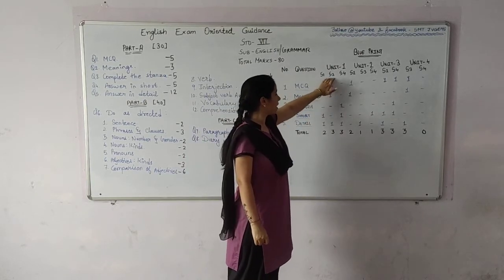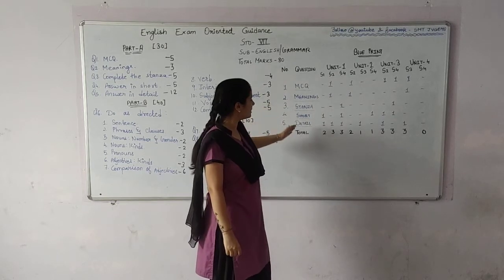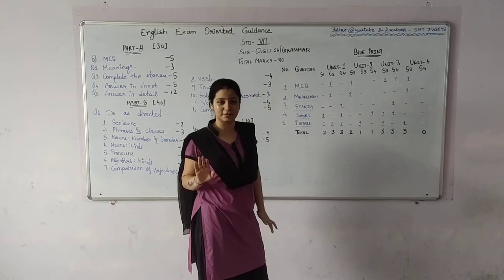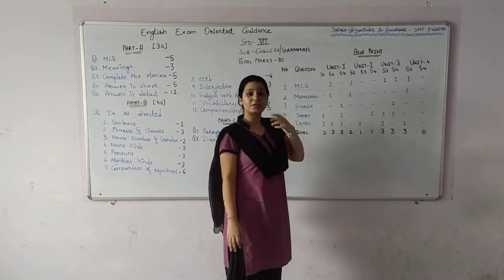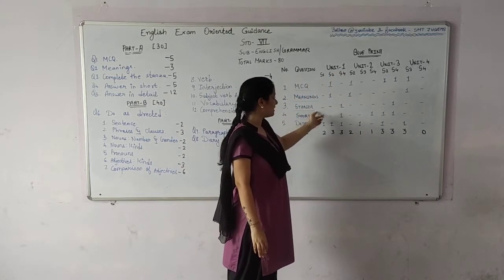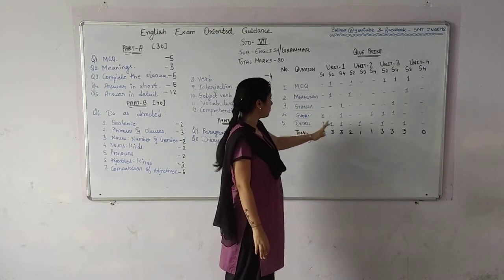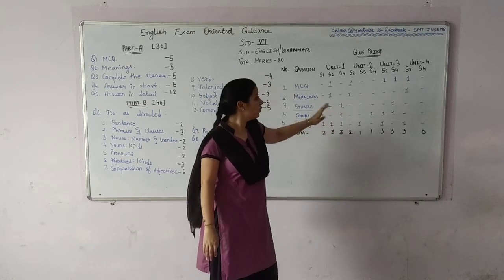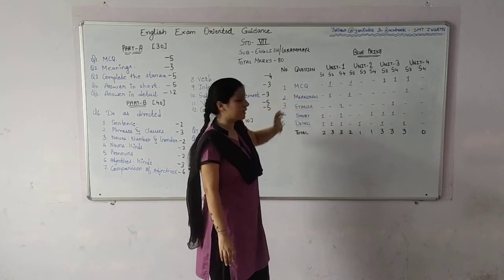Unit three section — in that chapter they have to learn MCQ, meaning, and detailed questions. They don't have to go with the short questions. Unit one section one, which is the poem — in that they have to go through the stanza, learn the poem as well, short questions and detailed questions. They do not have to go through the MCQ and meaning.